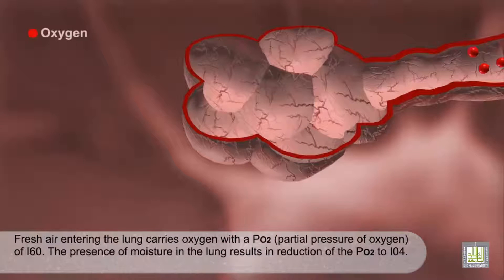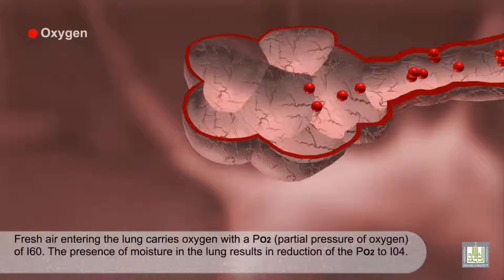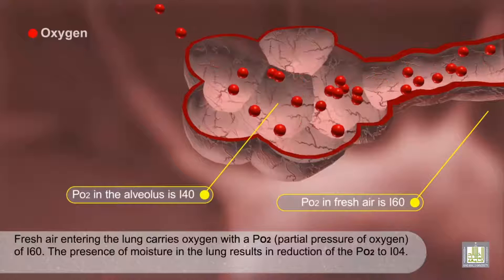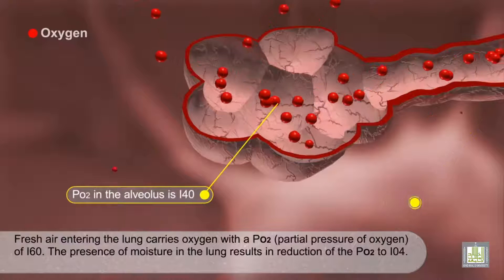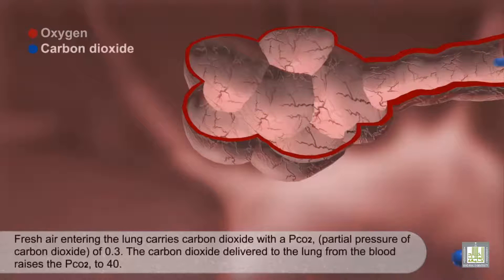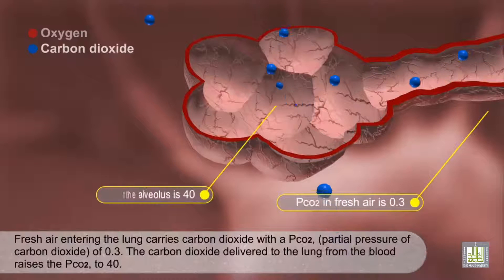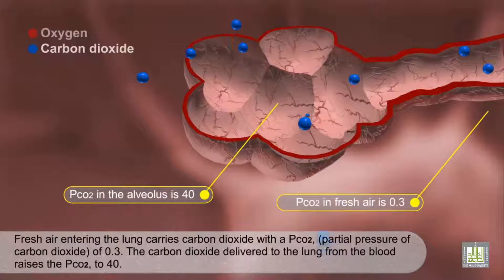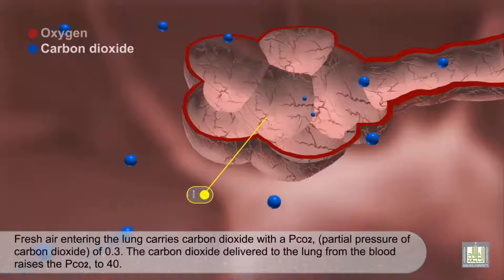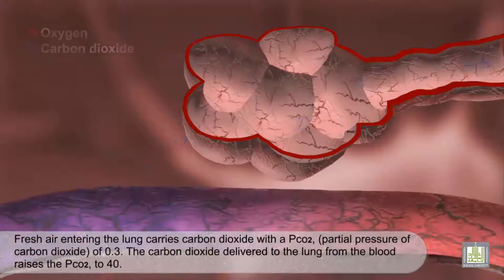Fresh air entering the lung carries a PO2 of 160. The presence of moisture in the lung results in a reduction of the PO2 to 104. Fresh air entering the lung carries carbon dioxide with a PCO2 — partial pressure of carbon dioxide — of 0.3. The carbon dioxide delivered to the lung from the blood raises the PCO2 to 40.